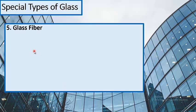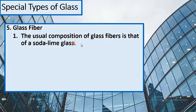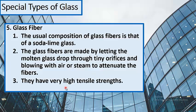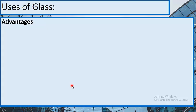Glass fiber: the usual composition of glass fiber is that of soda-lime glass. Glass fibers are made by letting the molten glass drop through tiny orifices and blowing with air or steam to attenuate the fibers. They have very high tensile strengths.